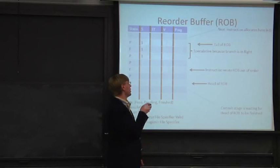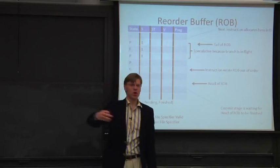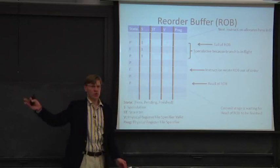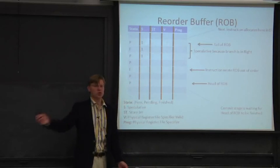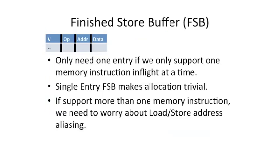We store a pointer into the physical register file rather than the actual value because it uses fewer bits. When a finished instruction is ready to commit, the ROB says go look in, say, physical register file entry 7, and pulls that value out. A good reference for this is the Shen Lipasti book, which is supplemental material for this class.